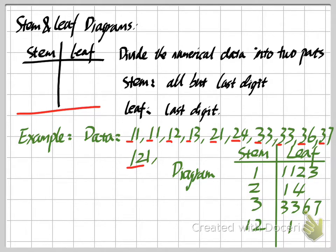So this is how we draw a stem and leaf graph by hand. The left column contains all of the stems — all digits except the last digit. The right column is our leaf column, containing only the last digit, listing all of them.